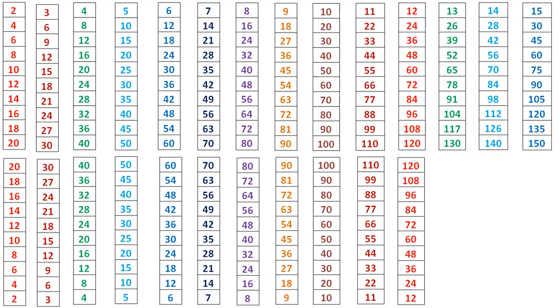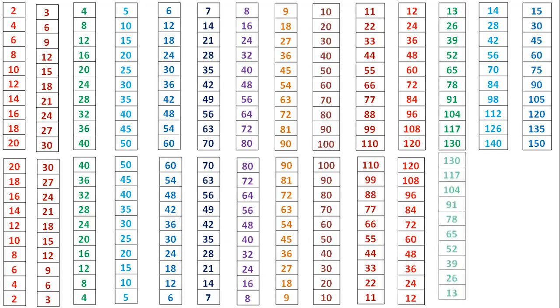12 times 10 is 120, 12 times 9 is 108, 12 times 8 is 96, 12 times 7 is 84, 12 times 6 is 72, 12 times 5 is 60, 12 times 4 is 48, 12 times 3 is 36, 12 times 2 is 24, 12 times 1 is 12.